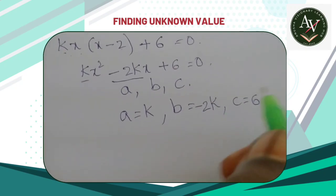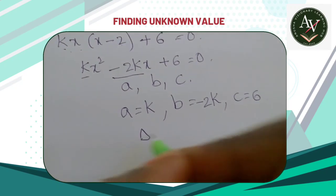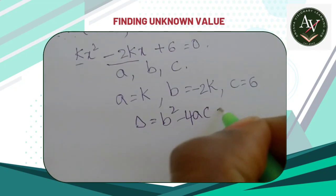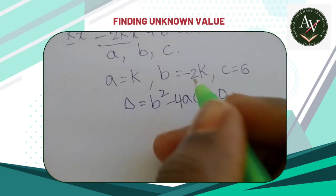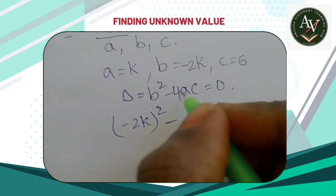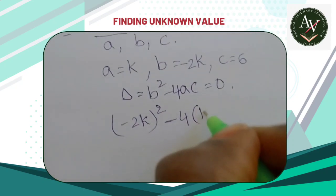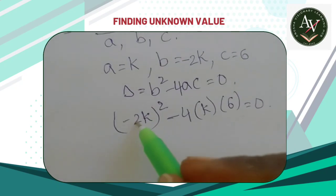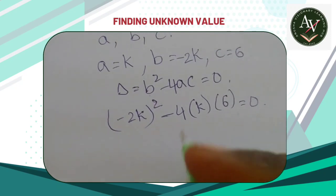Now substitute all these values for the equal roots. This means delta equals b² minus 4ac equals zero. Now substitute all these values. b² means minus 2k whole squared minus 4 into a means k, c means 6, that equals zero. Minus 2 whole squared means plus 2 squared. 2 squared value is 4.